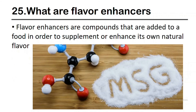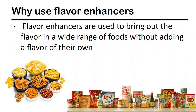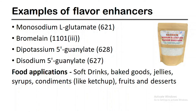Flavor enhancers are compounds added to food in order to supplement or enhance its own natural flavor. They are used to bring out the flavor in a wide range of foods without adding a flavor of their own. Monosodium glutamate, bromelain, dipotassium-5-guanylate, and disodium-5-guanylate are some examples. Soft drinks, baked goods, jelly, syrups, and condiments are some food applications of flavor enhancers.